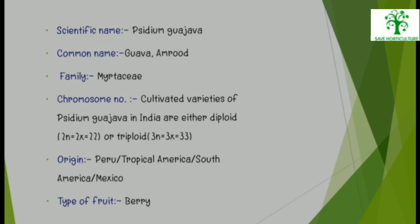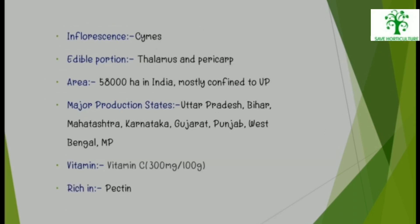Type of fruit is berry. Inflorescence is cymose. Edible portion is thalamus and pericarp. In India, Guava is cultivated in 58,000 hectares area, mostly confined to UP. Major production states are UP, Bihar, Maharashtra, Karnataka, Gujarat, Punjab, West Bengal, and MP. Vitamin C is present in Guava at 300 mg per 100 g. Guava is rich in pectin.